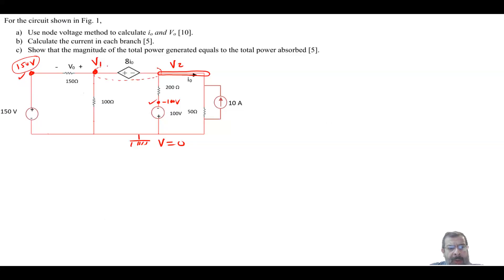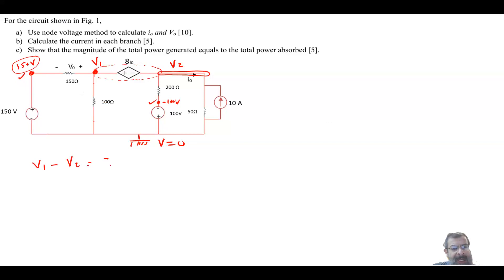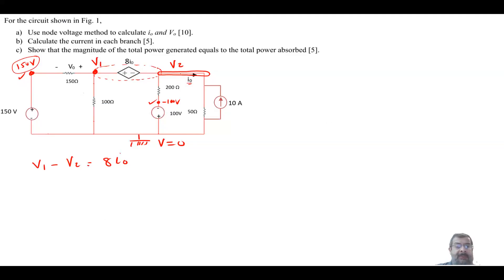The super node concept treats the whole node comprising V1 and V2 as just one node, and we apply KCL to it. But first, we note that V1 minus V2 equals 8·I0 — the difference between V1 and V2 equals the voltage across these two points, which is 8·I0, where 8 is the coefficient and I0 is the dependent current.